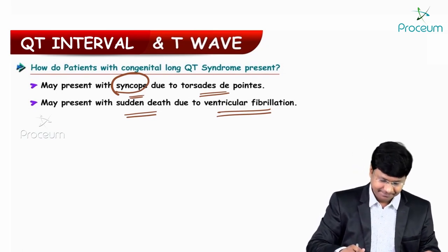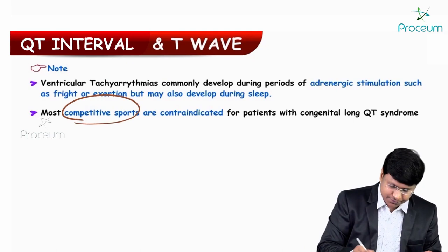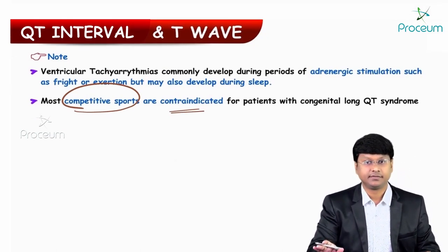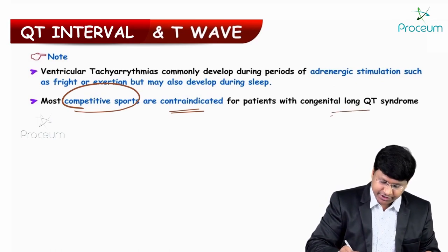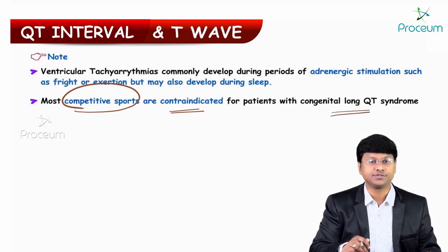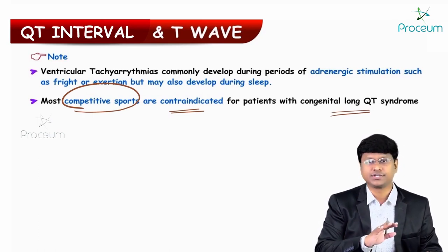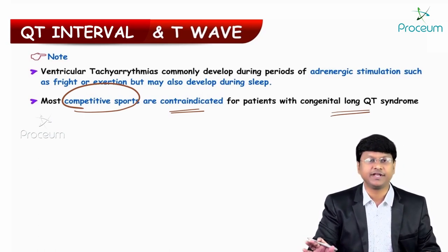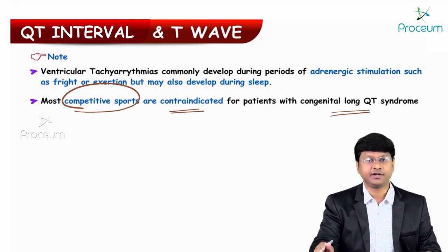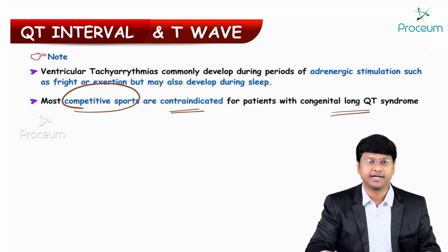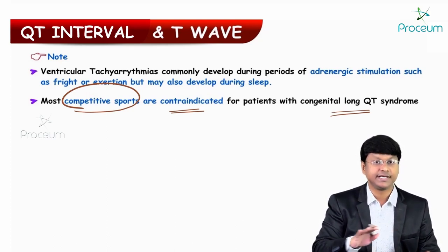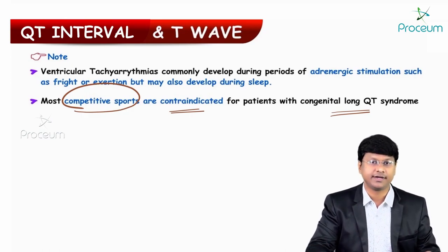Another important point: most competitive sports are contraindicated for patients with congenital long QT syndrome. They are absolutely contraindicated because these patients may have either a syncopal attack or may degenerate into ventricular fibrillation and present with sudden cardiac arrest.